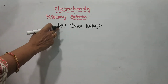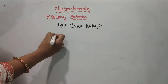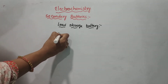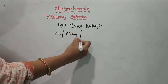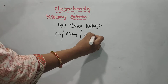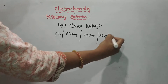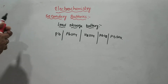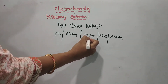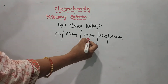In the lead storage battery, let us look at the reactions that take place and the cell representation. The cell representation shows: Lead | Lead sulfate || H2SO4 || Lead oxide | Lead sulfate. The electrolyte is 38% H2SO4 solution.